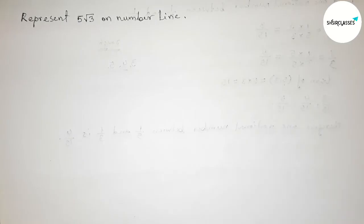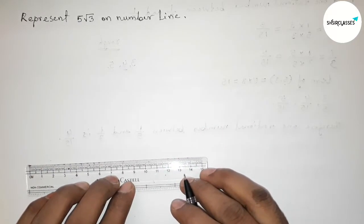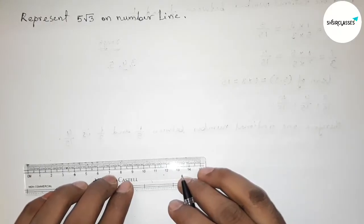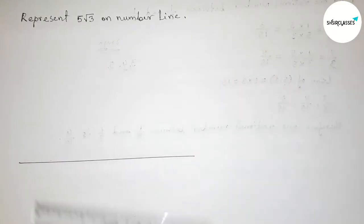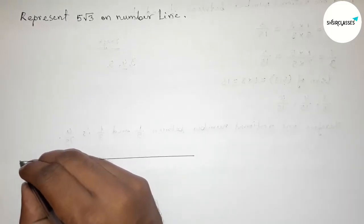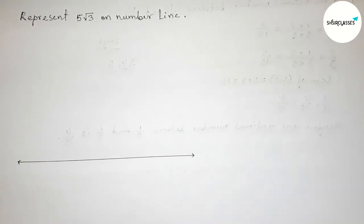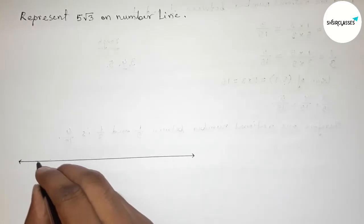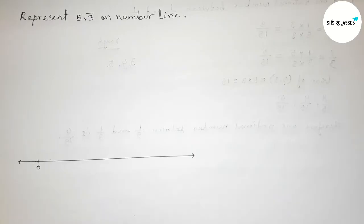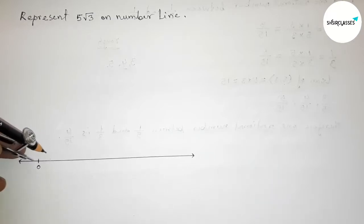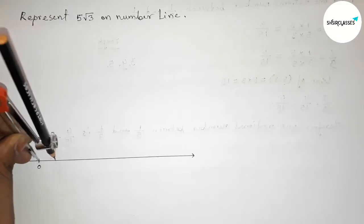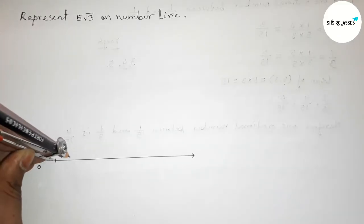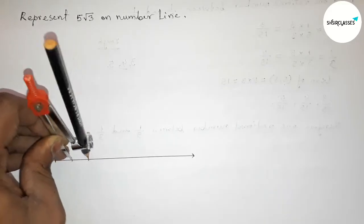First of all we have to make a number line. Drawing a line of any length with arrow marks on both sides. Taking the starting number zero and marking it. Next, with the help of a compass, taking any length and putting the compass on the point zero to mark numbers one, two, three, and so on.